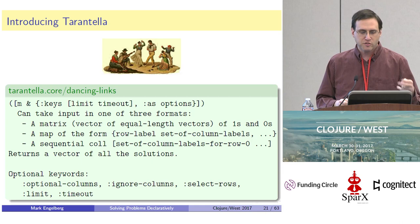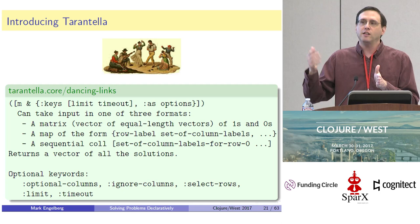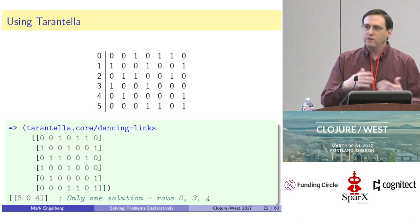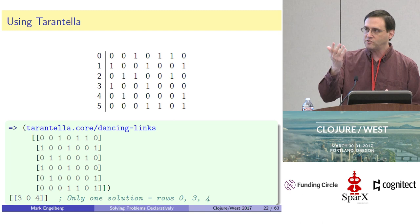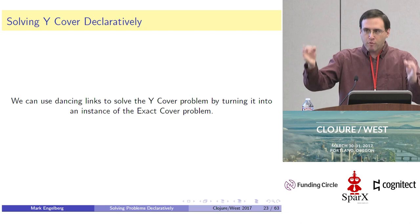Today I'll be using two kinds of inputs: it can take a matrix of ones and zeros, and it can also take a map from row labels to a set of all the column labels that have a one for that row. Here's an example of the dancing-links function in action. I've passed it the same matrix of zeros and ones we saw before, and it spits out that there's only one solution — rows three, zero, and four.